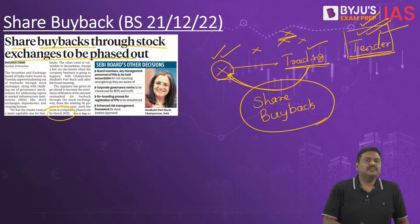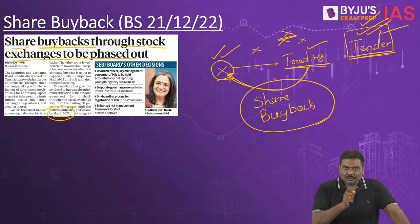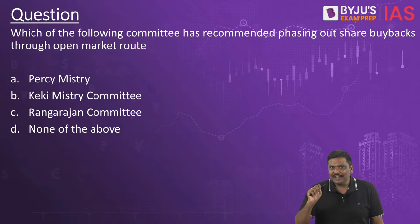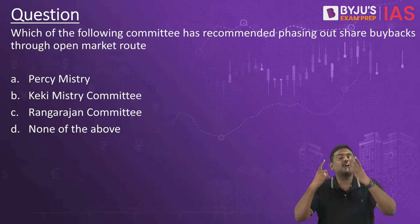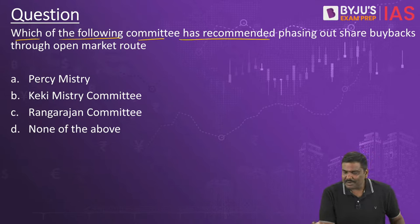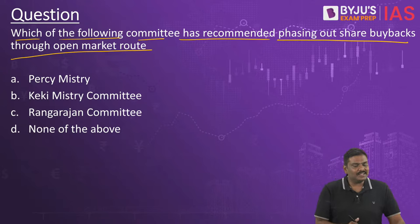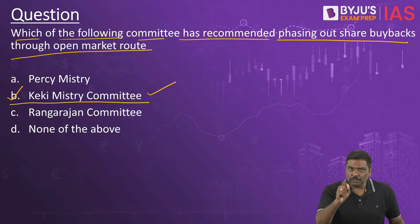MCQ: Which committee recommended phasing out share buybacks through the open market route? The right answer is Option B, the KK Mistry Committee. Please remember this, as it can be asked in the UPSC preliminary examination.